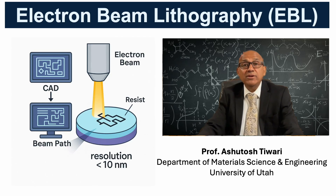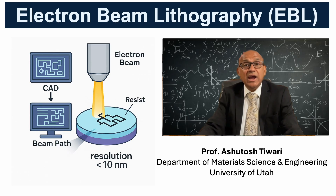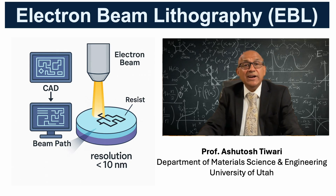Electron beam lithography eliminates masks altogether. A finely focused electron beam scans across an electron-sensitive resist according to a computer-generated pattern. Because electron wavelengths at tens of kilo-electron volts are extremely small, EBL achieves sub-10 nanometer resolution.